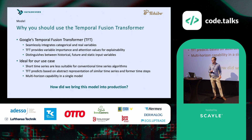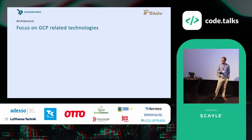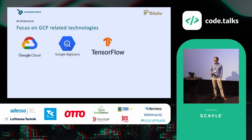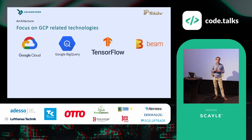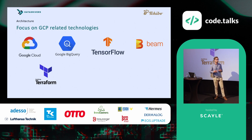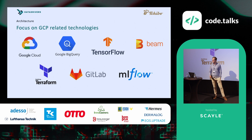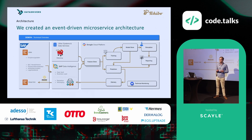The model is a neural network — very complex — so we had to consider how to bring it into production. We used GCP-related technologies: Google BigQuery as our data store to create a feature store, TensorFlow to train and run inference, Google Dataflow and Apache Beam for all big data processing, Terraform to roll out all our code and infrastructure, GitLab for CI/CD and code repository, and MLflow to track our model and supply it to inference pipelines.